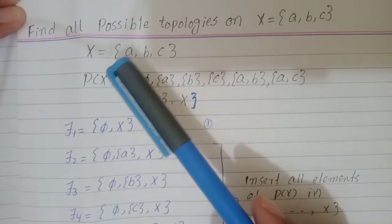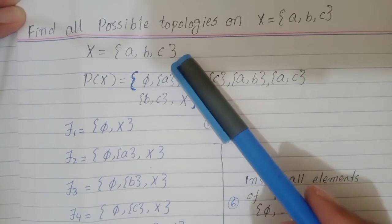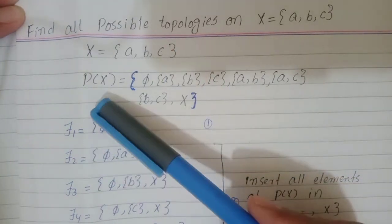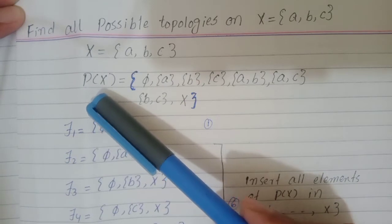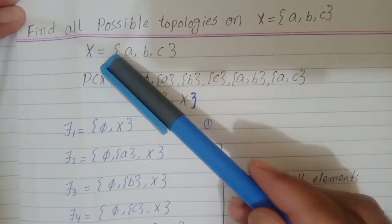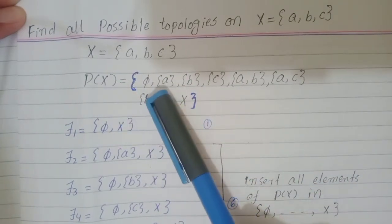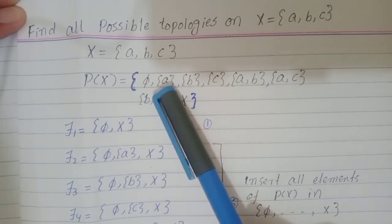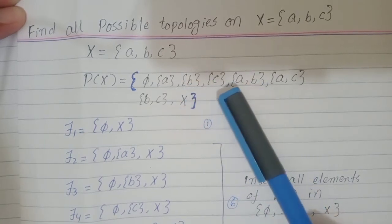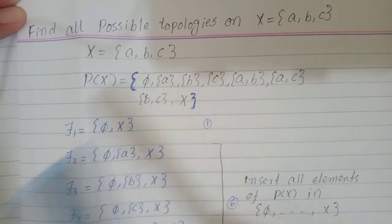We have a ground set X whose elements are A, B, C. There are 29 topologies on this set. First we find the power set of X consisting of all possible subsets: φ, {A}, {B}, {C}, {A,B}, {A,C}, {B,C}, and X.